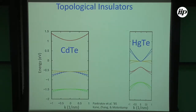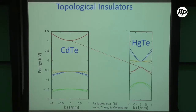Let me briefly introduce what a topological insulator is — the main idea. These are like ordinary materials such as mercury telluride and cadmium telluride. This is the band structure, so the valence and conduction bands. What these materials have that is very distinct is the ordering of the bands. This is the usual ordering — the valence band and the conduction band, the red and blue. I want to focus on the blue and the red ones: this is like S-symmetry, because it comes from an S orbital in a tight-binding view.